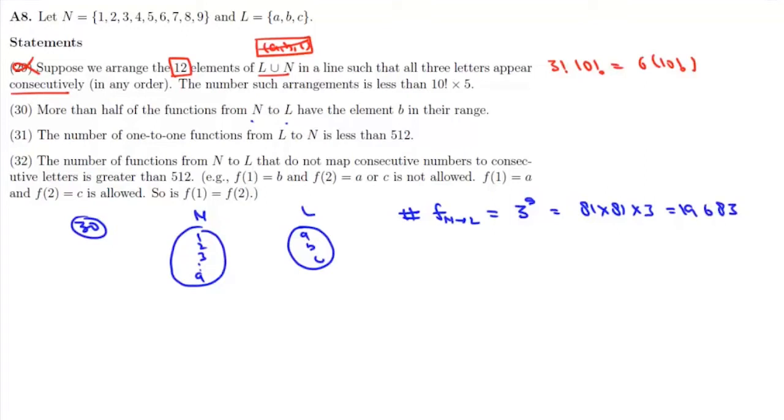Now we'll find number of functions from N to L in which B is in its range. So total number of such functions will be total number of functions which is 3^9 minus all those functions which do not have B in their range.